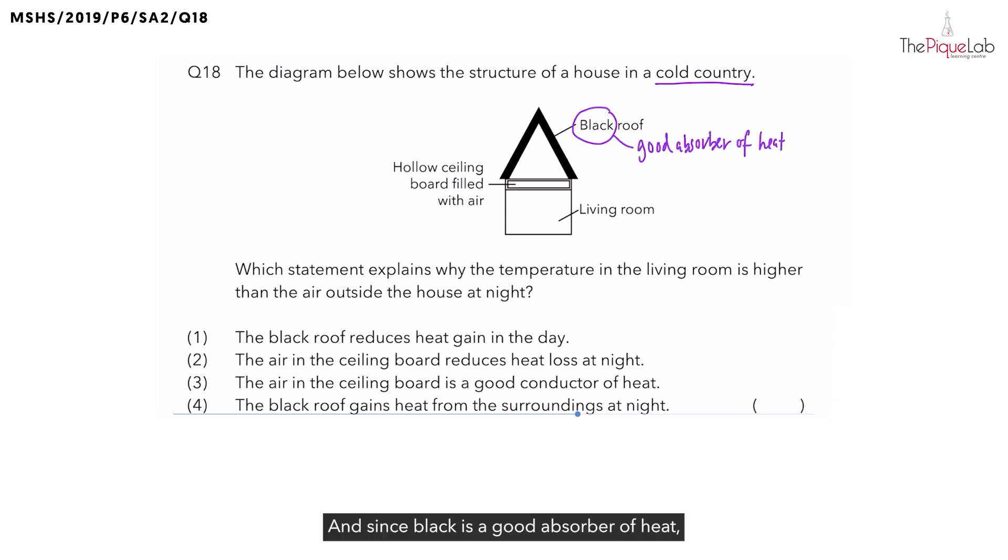And since black is a good absorber of heat, would it increase or decrease the amount of heat gain from the sun in the day? This should increase the amount of heat gain from the sun in the day.